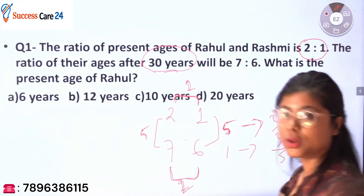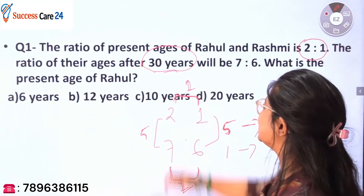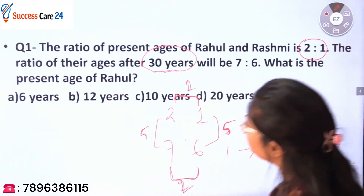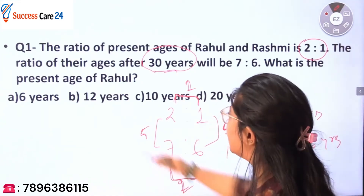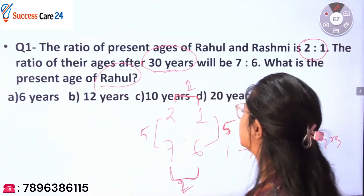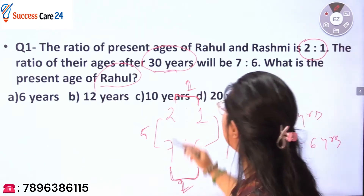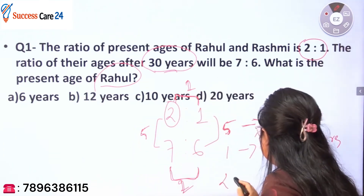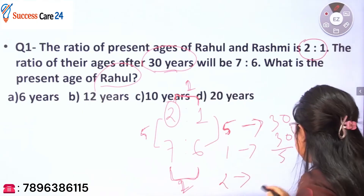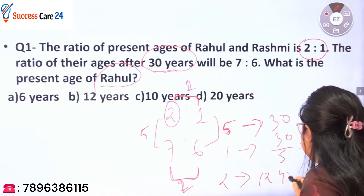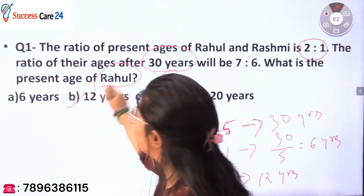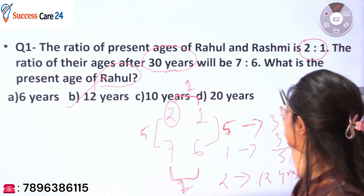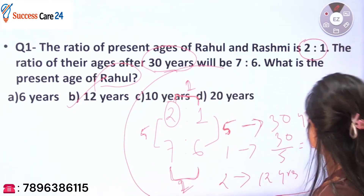Now you know the value of one ratio. The present ages of Rahul and Rashmi are in the ratio 2 is to 1. You are asked to find the age of Rahul, whose ratio is 2. So two ratios = 2 × 6 = 12 years. Option B is the correct answer.